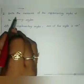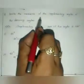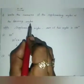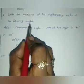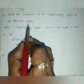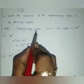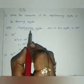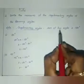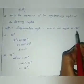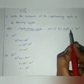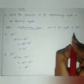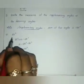Moving on to the second sum: write the measures of the supplementary angles of the following angles. In the first sum we saw complementary angles; here we are going to see supplementary angles. Supplementary angles means the sum of two angles is 180 degrees.